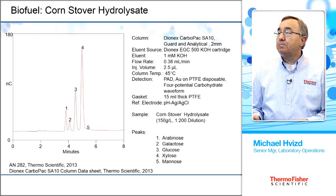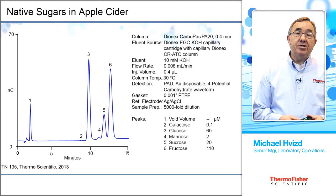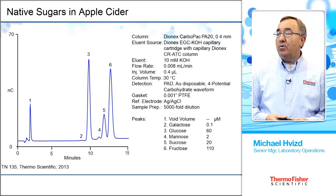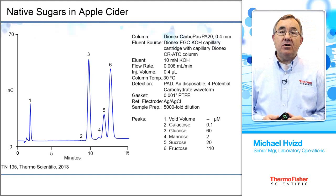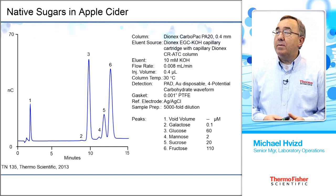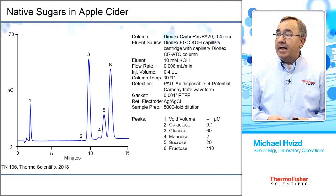Another chromatogram shows native sugars in apple cider, referencing tech note 135. You can find any of these technical or application notes on the thermoscientific.com website. This is another capillary separation running at 8 microliters per minute, looking at the native sugars: galactose, glucose, mannose, sucrose, and fructose, all in apple cider.